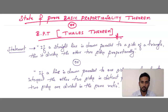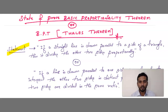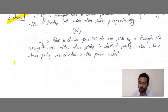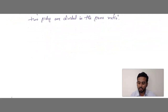Here the question is: 'State and prove the Basic Proportionality Theorem.' I have given you two statements — whichever is convenient and easy for you, you can follow that one. Both have the same meaning but are written differently. Statement 1: If a straight line is drawn parallel to a side of a triangle, then it divides the other two sides proportionally. Statement 2: If a line is drawn parallel to one side of a triangle to intersect the other two sides in distinct points, the other two sides are divided in the same ratio.